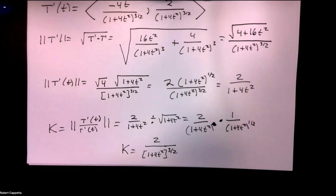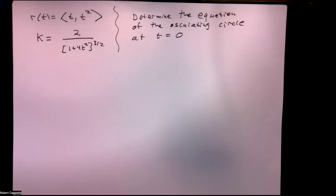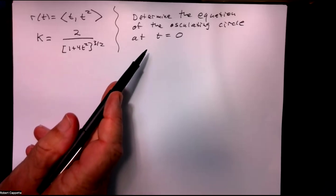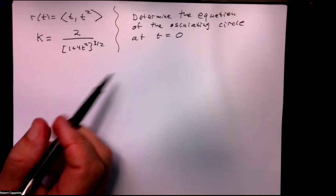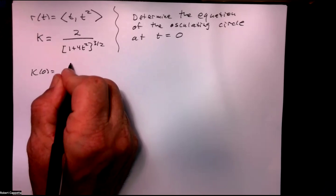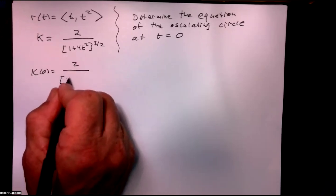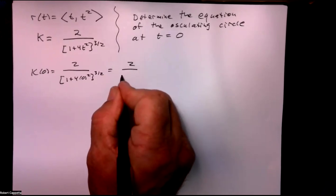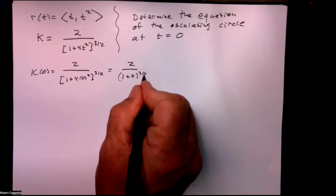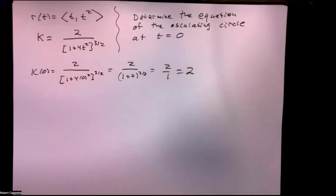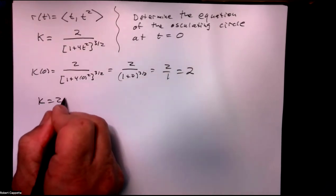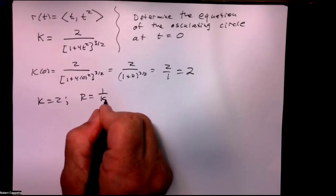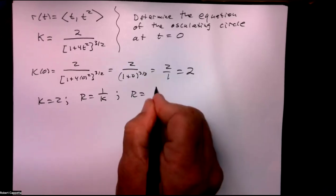Next we want to discuss the osculating circle — the circle of curvature at the vertex. We have r(t) = (t, t²) and our curvature formula, and we want the equation of the osculating circle at t = 0. The curvature at t = 0 is 2/(1 + 4·0²)^(3/2) = 2/1 = 2. The radius of the osculating circle is 1 over the curvature, so the radius is 1/2.